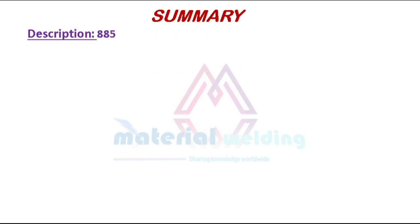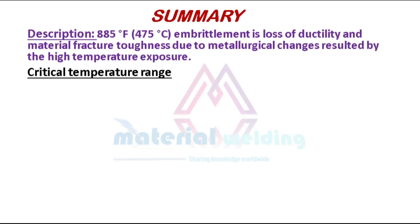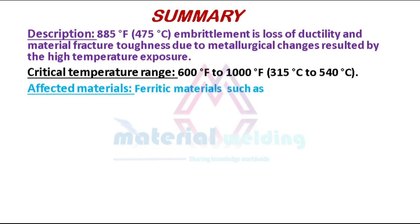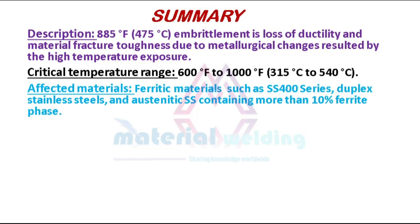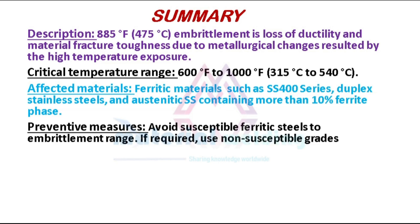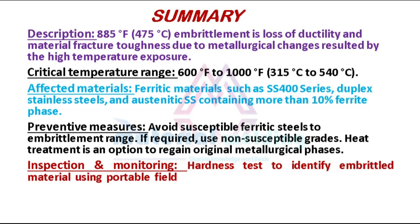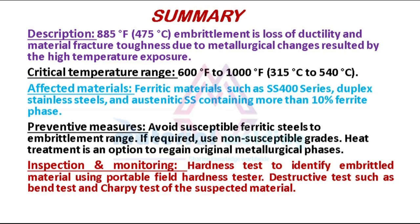Summary: 885 degrees Fahrenheit embrittlement is the loss of ductility and material fracture toughness due to metallurgical changes resulting from high temperature exposure. Critical temperature range: 600 degrees Fahrenheit to 1000 degrees Fahrenheit, or 315 degrees Celsius to 540 degrees Celsius. Affected materials: ferritic materials such as SS-400 series, duplex stainless steels, and austenitic SS containing more than 10% ferrite phase. Preventive measures: avoid exposing susceptible ferritic steels to the embrittlement range; if required, use non-susceptible grades; heat treatment is an option to regain original metallurgical phases. Inspection and monitoring: hardness testing using a portable field hardness tester; destructive tests such as bend test and Charpy impact test of the suspected material.